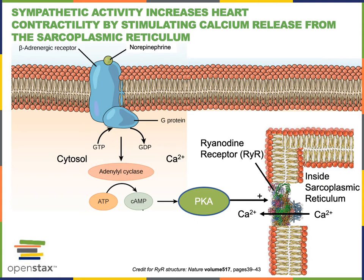Here we see the mechanism through which sympathetic activity stimulates an increased release of calcium from the sarcoplasmic reticulum. Norepinephrine activates beta-adrenergic receptors on contractile cells, leading to production of cyclic AMP and activation of protein kinase A. Protein kinase A phosphorylates ryanodine receptors, stimulating their opening and making the calcium-induced calcium release mechanism more sensitive. More calcium is therefore released from the sarcoplasmic reticulum during the action potential, increasing contractility and the force of contraction.